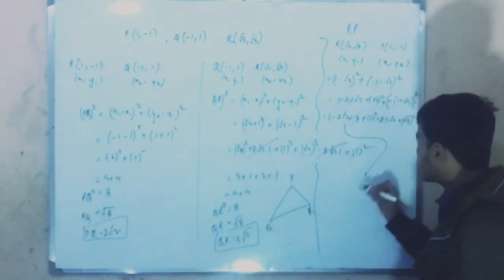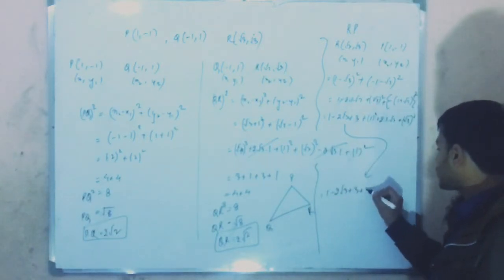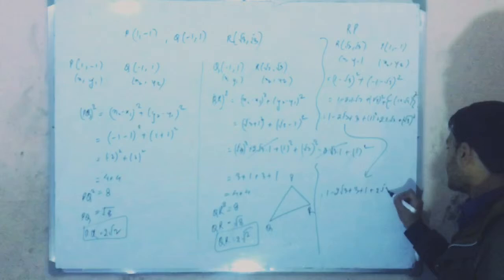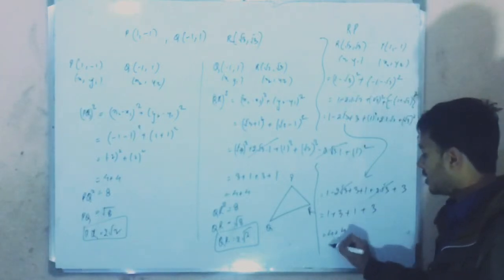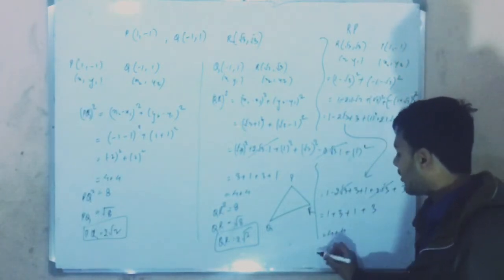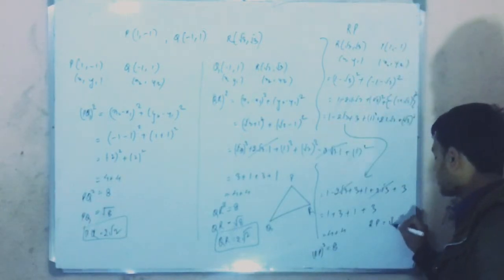And for the other term, 1 plus 2 root 3 plus 3. Adding these together: 1 minus 2 root 3 plus 3 plus 1 plus 2 root 3 plus 3. The root 3 terms cancel, leaving 1 plus 3 plus 1 plus 3, which equals 8. So RP squared equals 8, therefore RP equals 2 root 2.